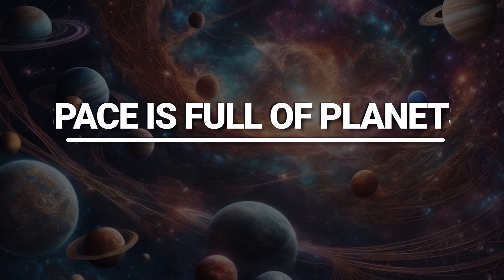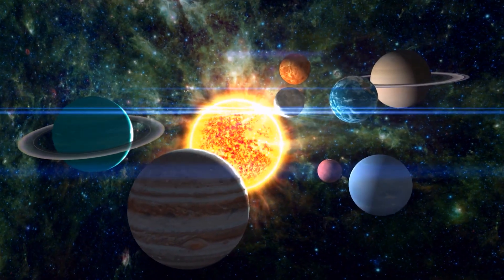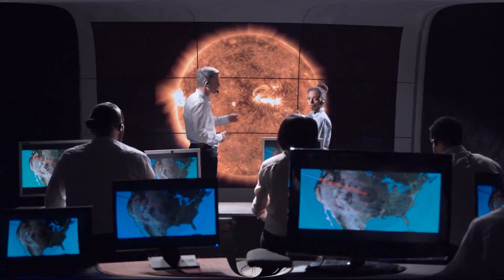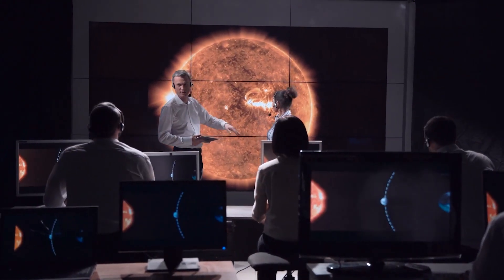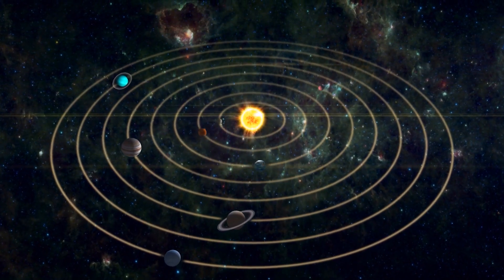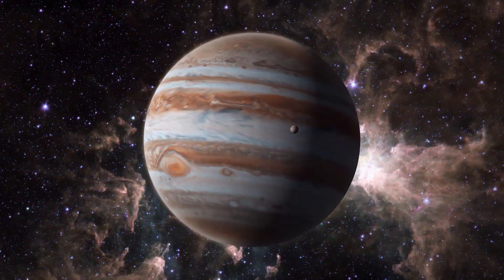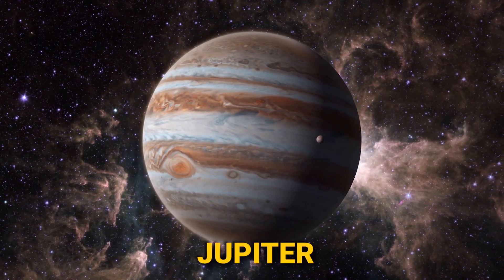Space is full of planets. There are billions of planets in the universe, and some of them may even be habitable. Scientists have discovered thousands of planets outside of our solar system, called exoplanets. These planets come in a variety of sizes and shapes, and some of them are even more massive than Jupiter.